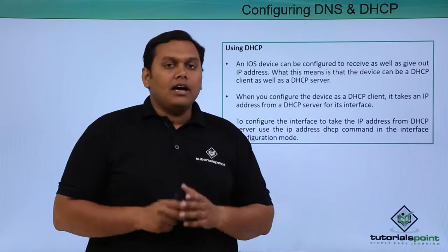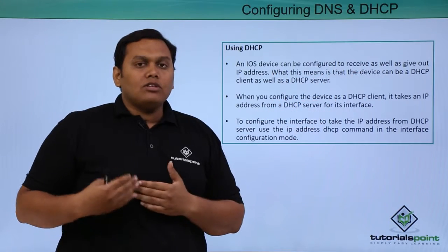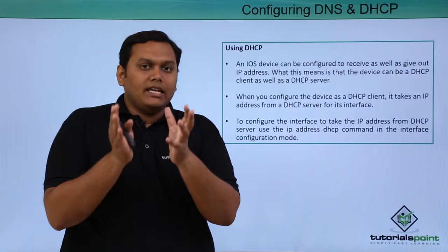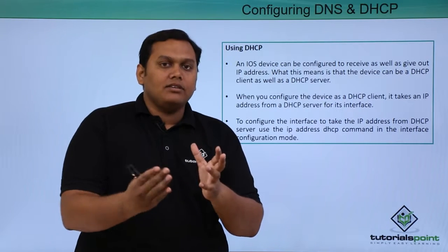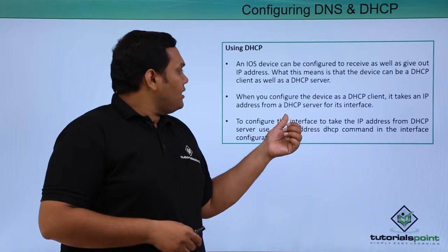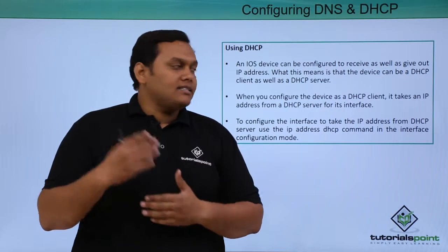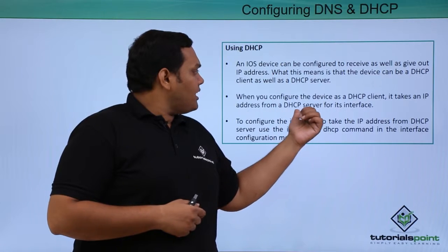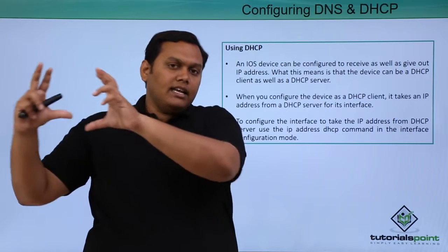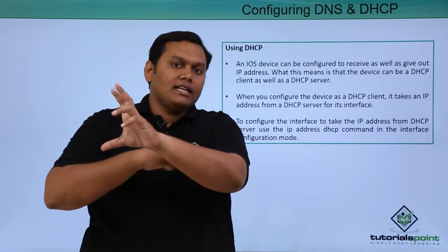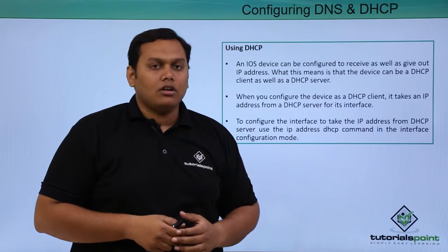Coming to DHCP — the IOS device can be configured to receive as well as give out IP addresses. DHCP is a server which assigns IP addresses automatically. When you configure a device as a DHCP client, it receives the address from a DHCP server for its interface, and the DHCP server in the network will automatically assign IP addresses to the interfaces available on the router.